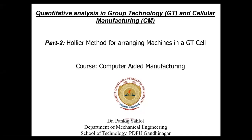We have seen how to quantitatively analyze group technology and cellular manufacturing. In this video we will mainly focus on Part 2, which is how to arrange the machines in the group technology cell. In the first video we arranged the parts and machines together in a cell. Now, using the Heuler method, we will arrange the machines in a cell only, and logically optimize that arrangement sequence.